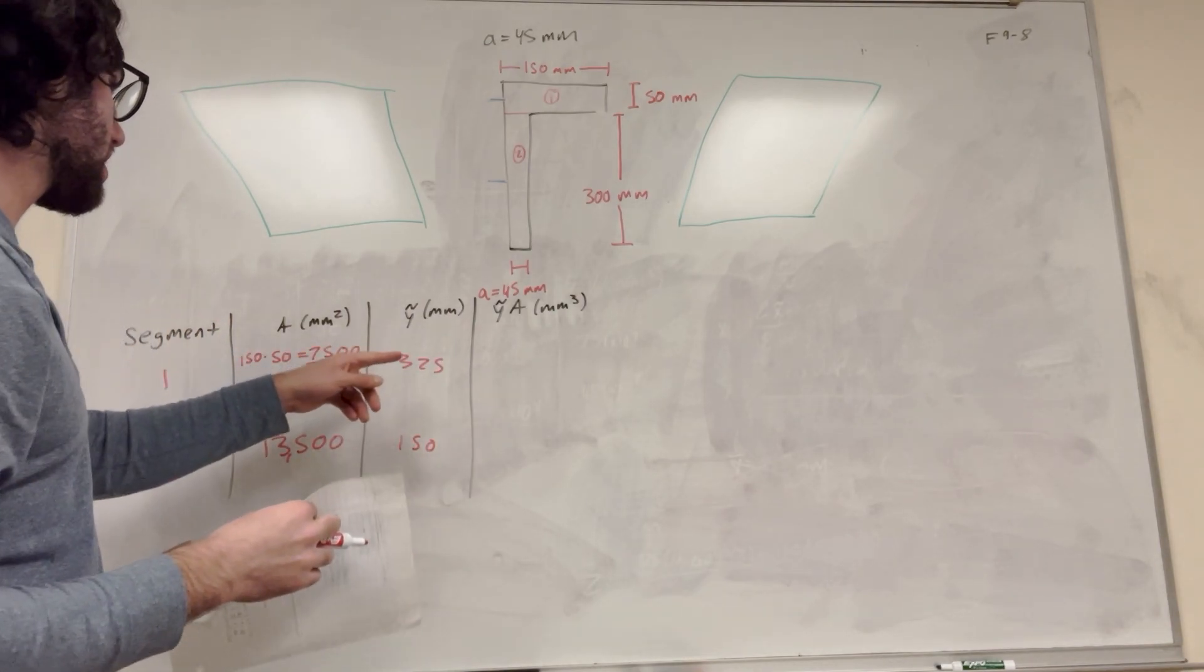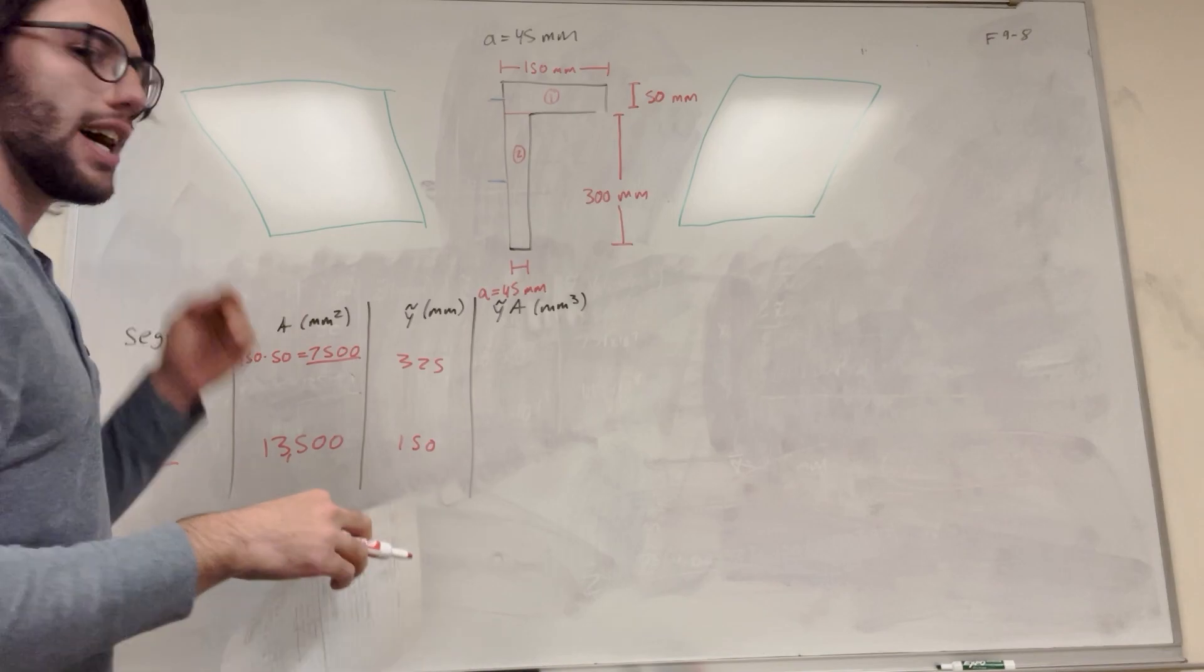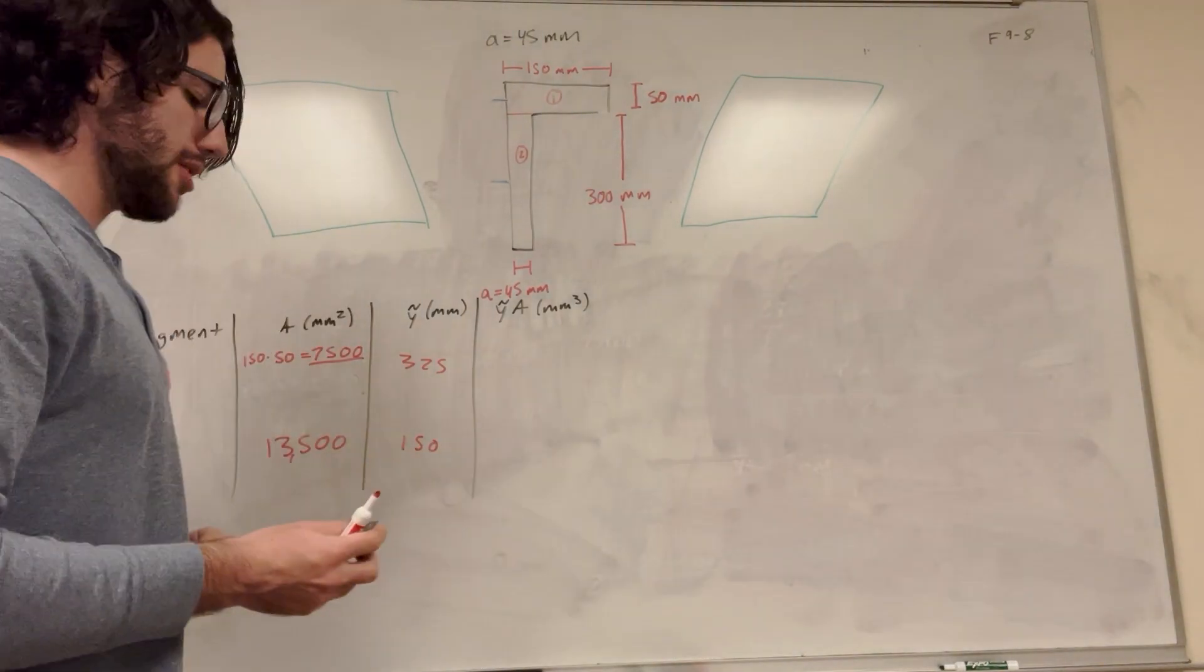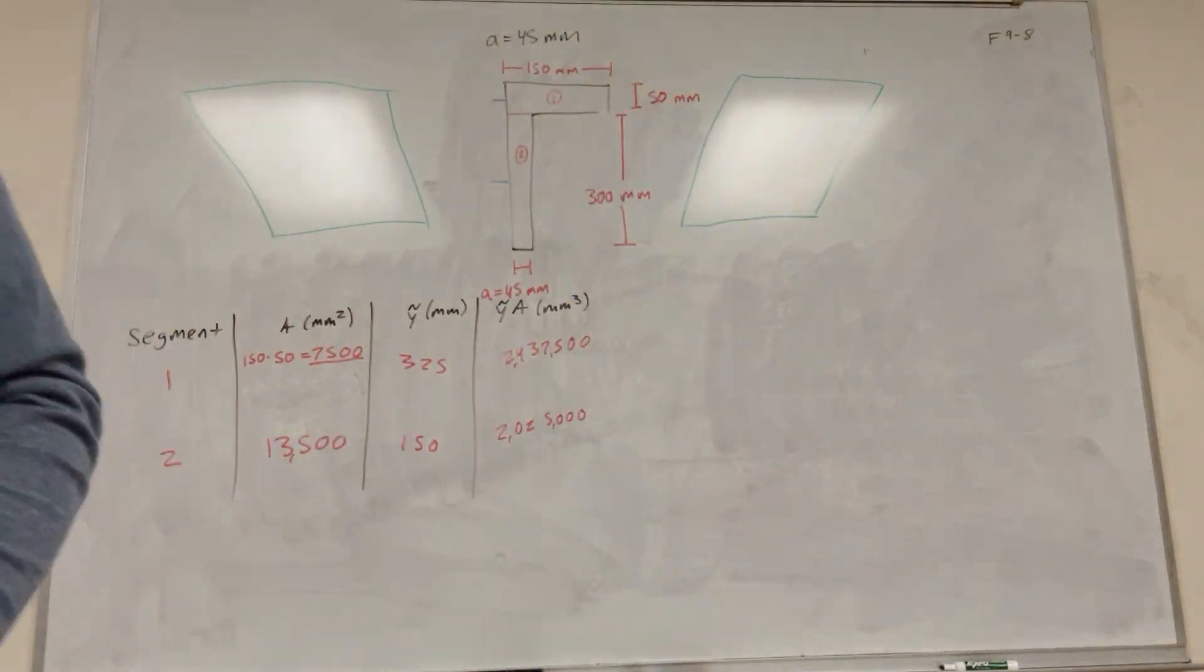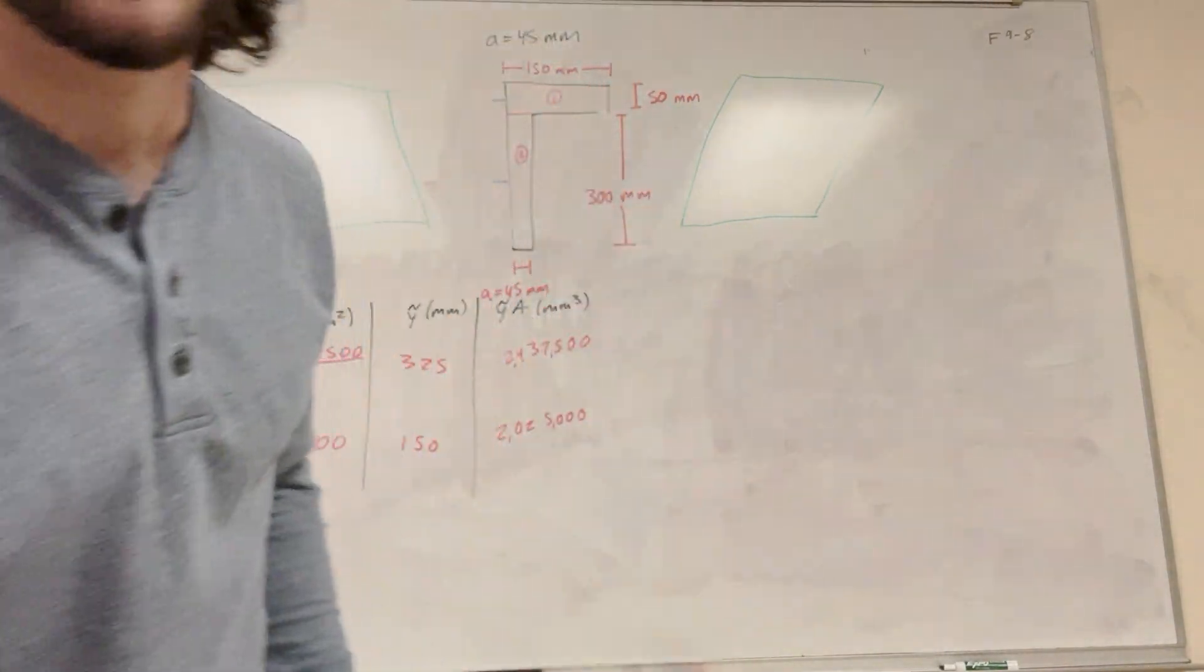Right. So then we just need to multiply these together. I turned in too bad already. So there you go. We get two big numbers here. So I lost my notes. Here they are.